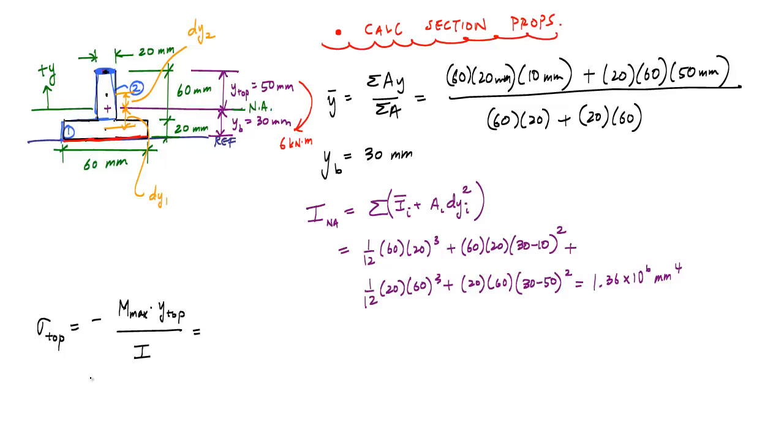When we substitute some numbers, this would be minus 6 kilonewton meters times the distance to the top, which would be 50 millimeters, divided by the moment of inertia, 1.36 times 10 to the 6 millimeters to the 4th. I want to convert into millimeters, so 1,000 millimeters per meter. This number is 0.2206 gigapascals or 220.6 megapascals.